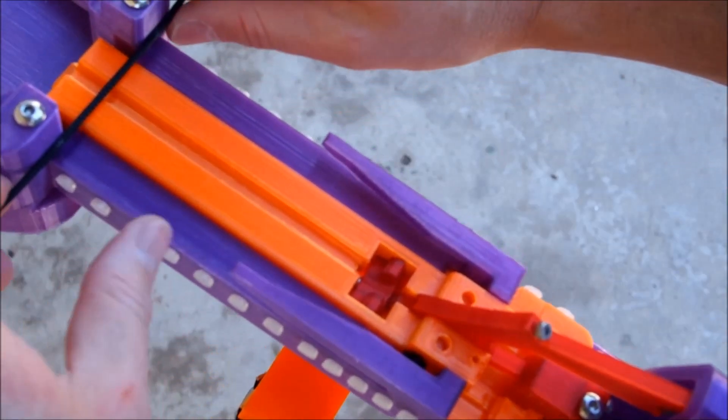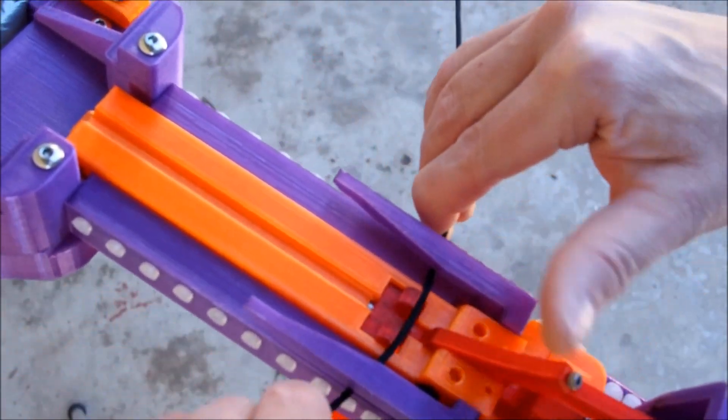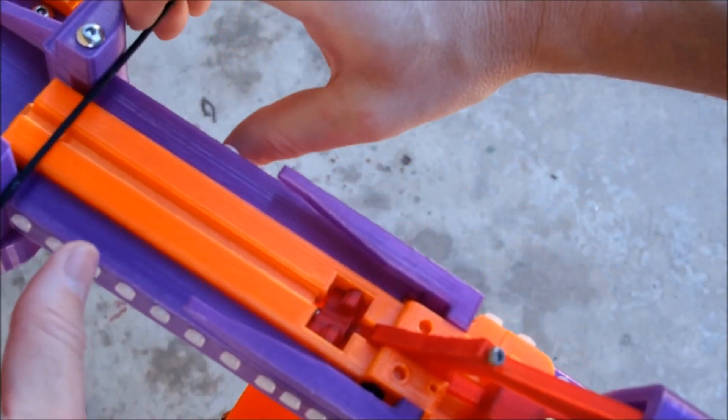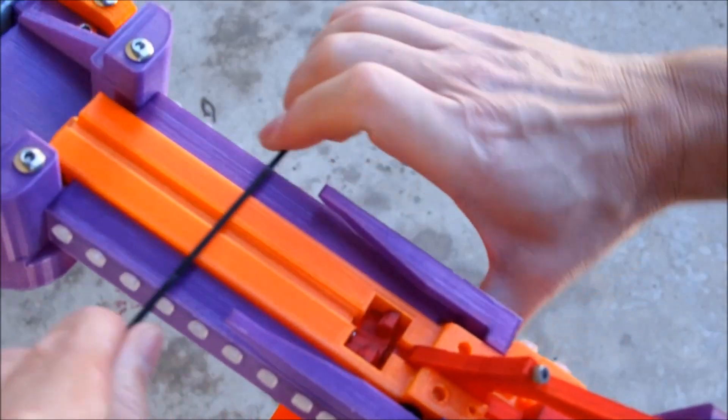Once again, loading like so. And then when you pull the trigger, those teeth are going to slip back under the rail, and the string is going to go forward, like so.